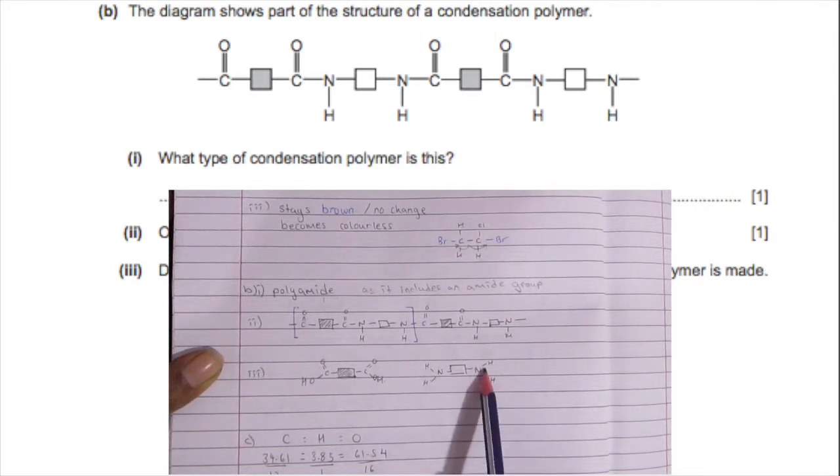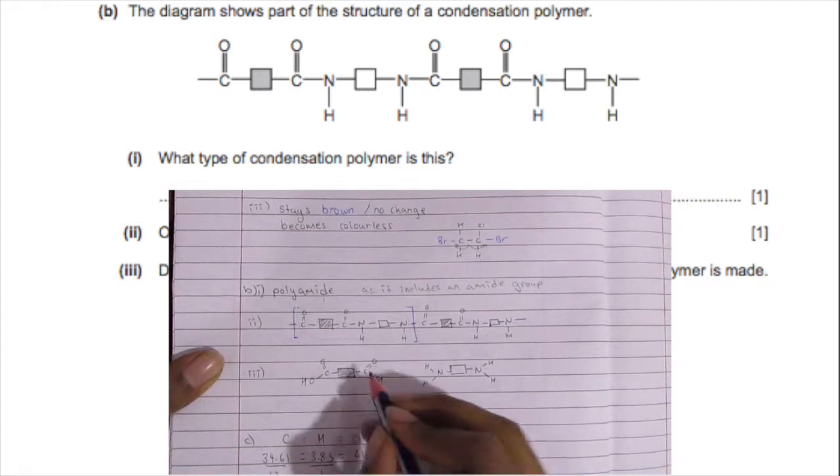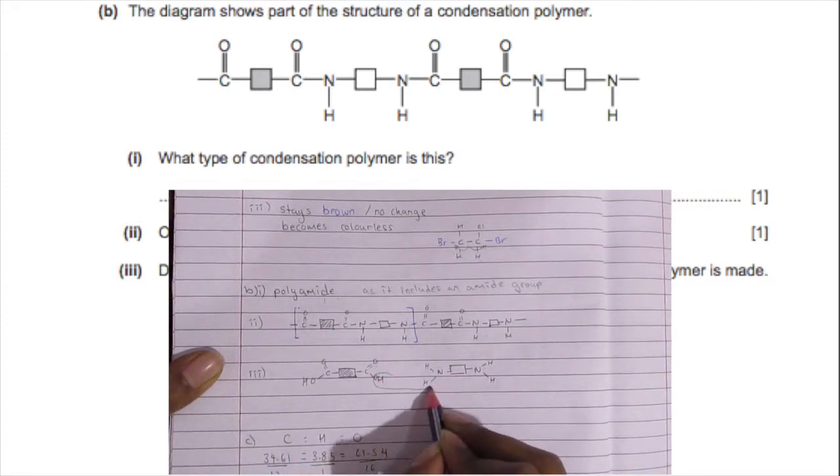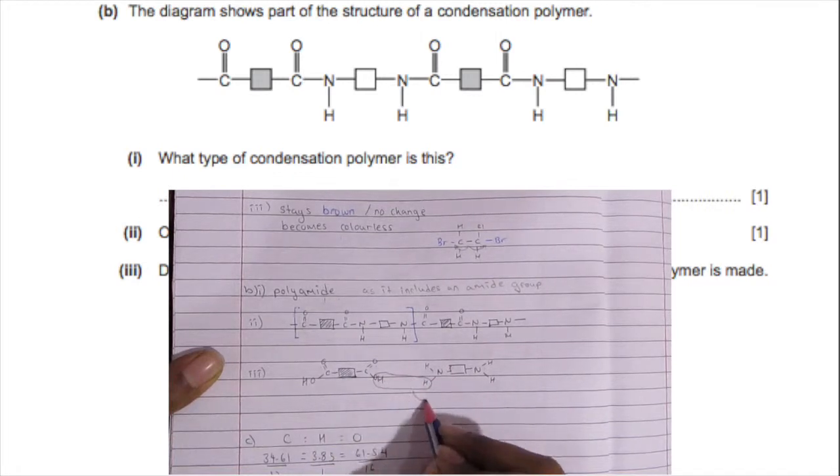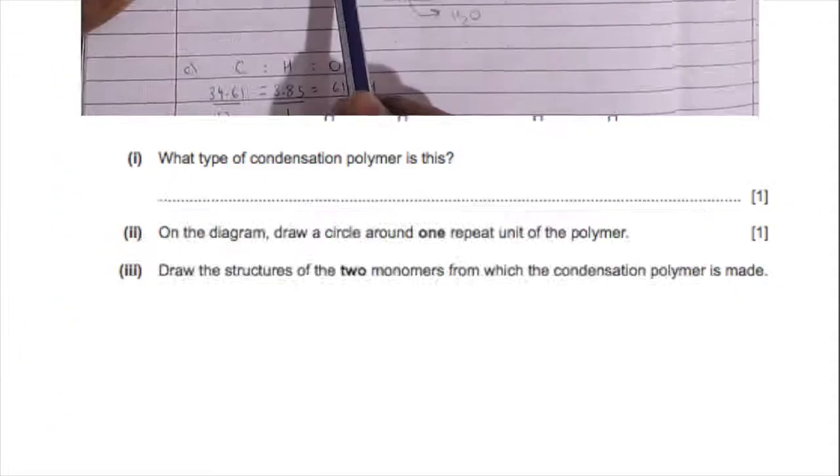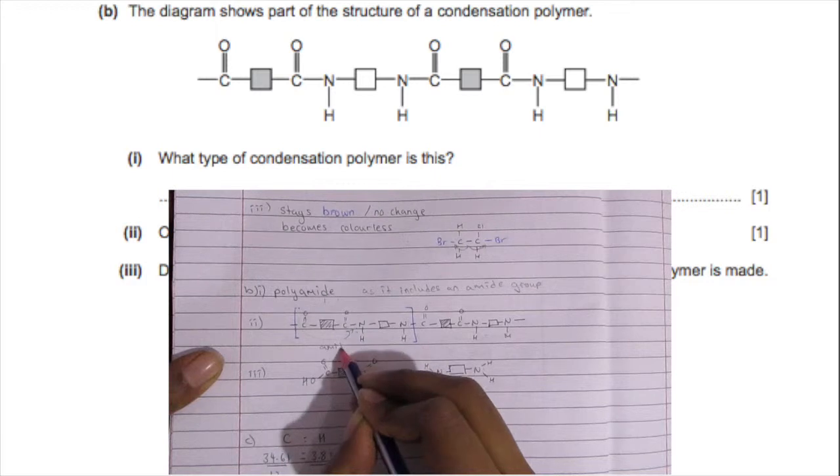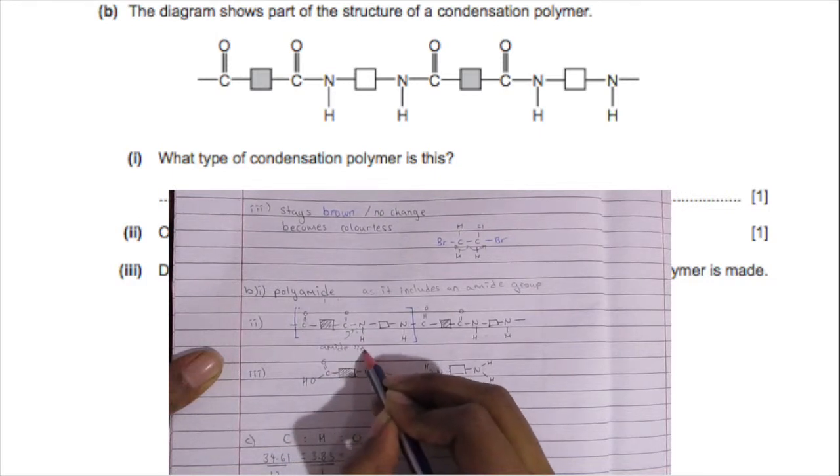Now the repeat unit involves two monomers in this case and you can see it's the one with two amine groups and two carboxylic groups, and obviously that's repeated every time. So you got a di-carboxyl group and a di-amine group. So then the hydrogen and the hydroxide will react together to form water, and then the carbon and the nitrogen will bond together forming an amide linkage. And yeah, so then you have a polyamide and that is constantly repeated.